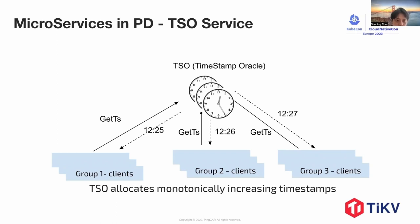In addition to splitting the TSO service, we also partition it for different tenants. As shown in the picture, each tenant is assigned to a group and each group has its own TSO service with its own metadata stored in etcd to provide the TSO service for each group. This partitioning allows us to achieve scalability and reduce the failure risk, meaning that if there is a failure with one group's TSO service, it won't affect the other tenant groups.